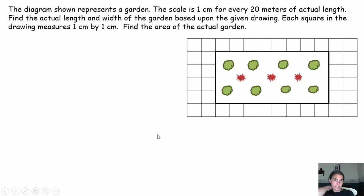Let's take a look at our second example. The diagram shown represents a garden. The scale is one centimeter for every 20 meters of actual length. Find the actual length and width of a garden based on the scale drawing. We know each square in the drawing measures one centimeter by one centimeter. And then after we find the actual length and width, we'll find the actual area of the garden.